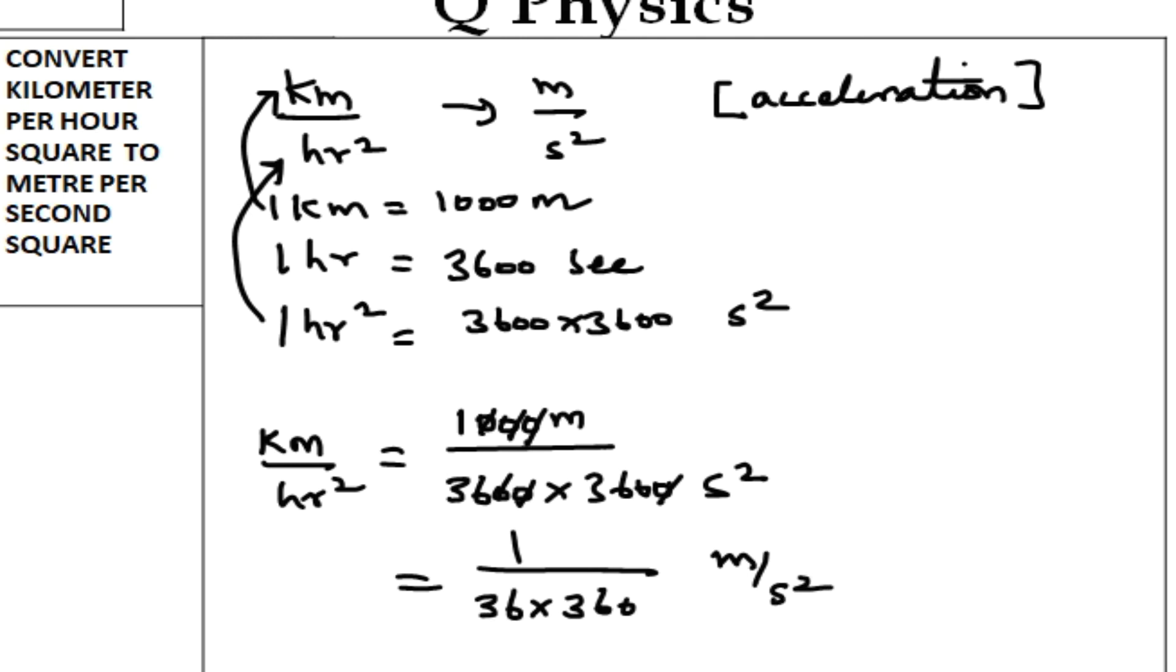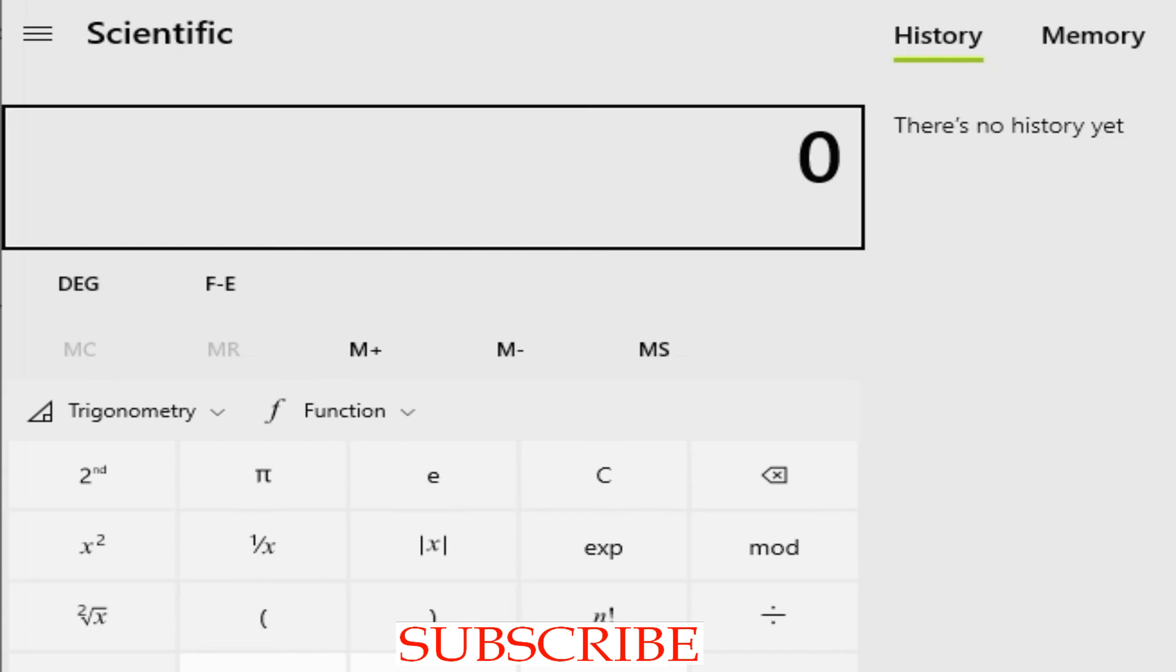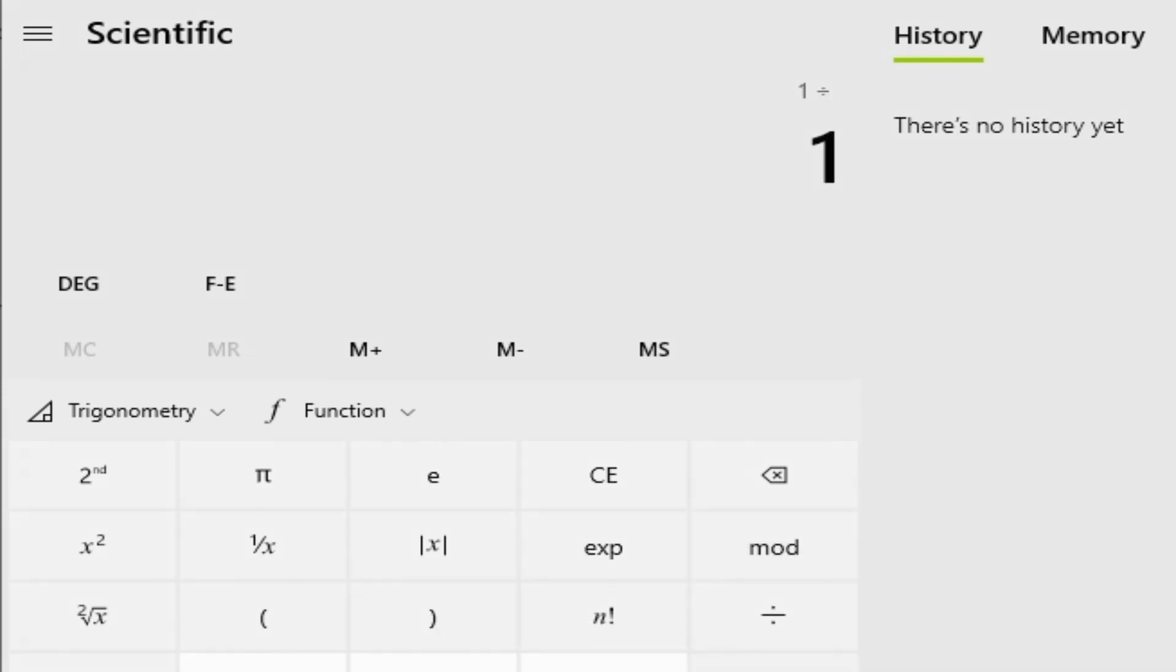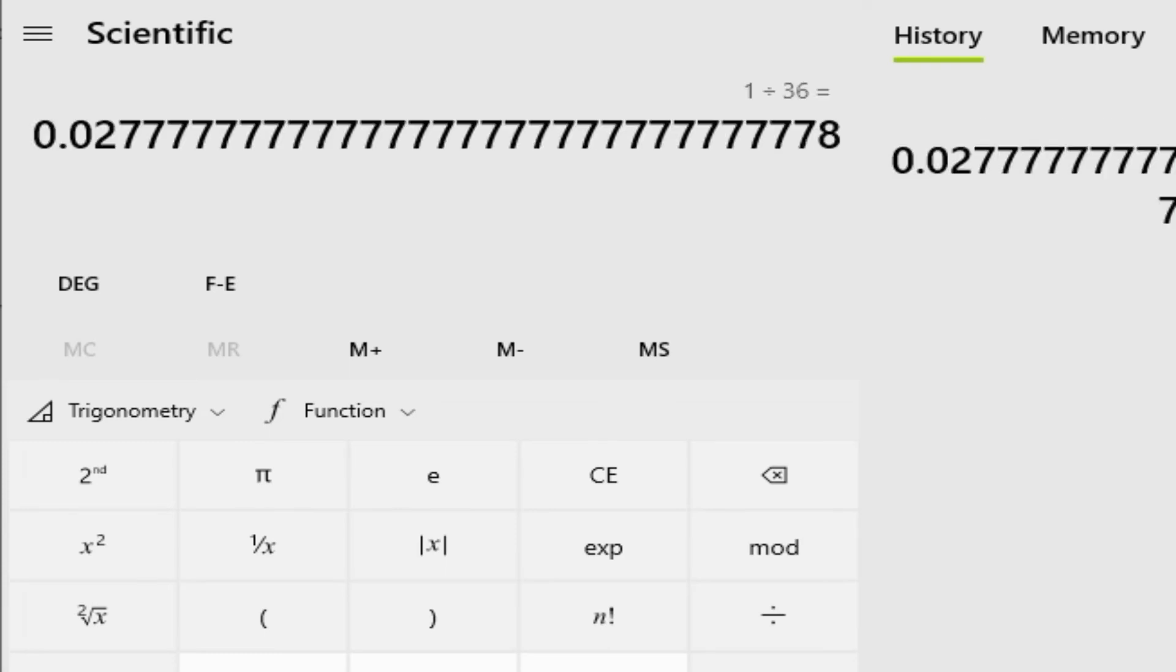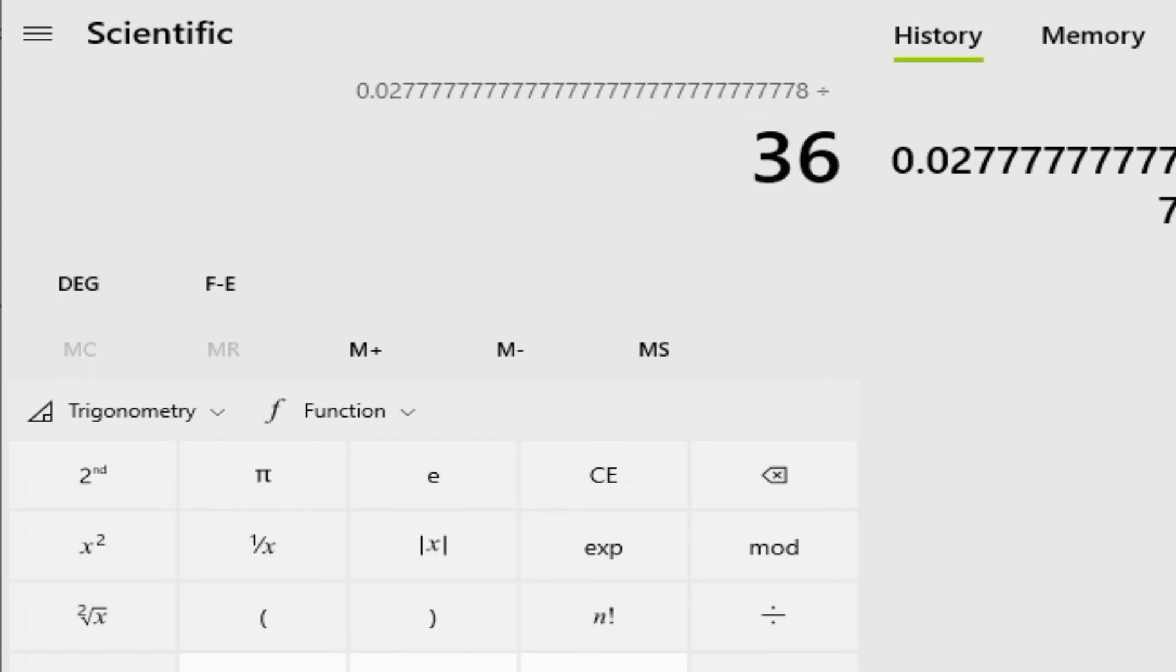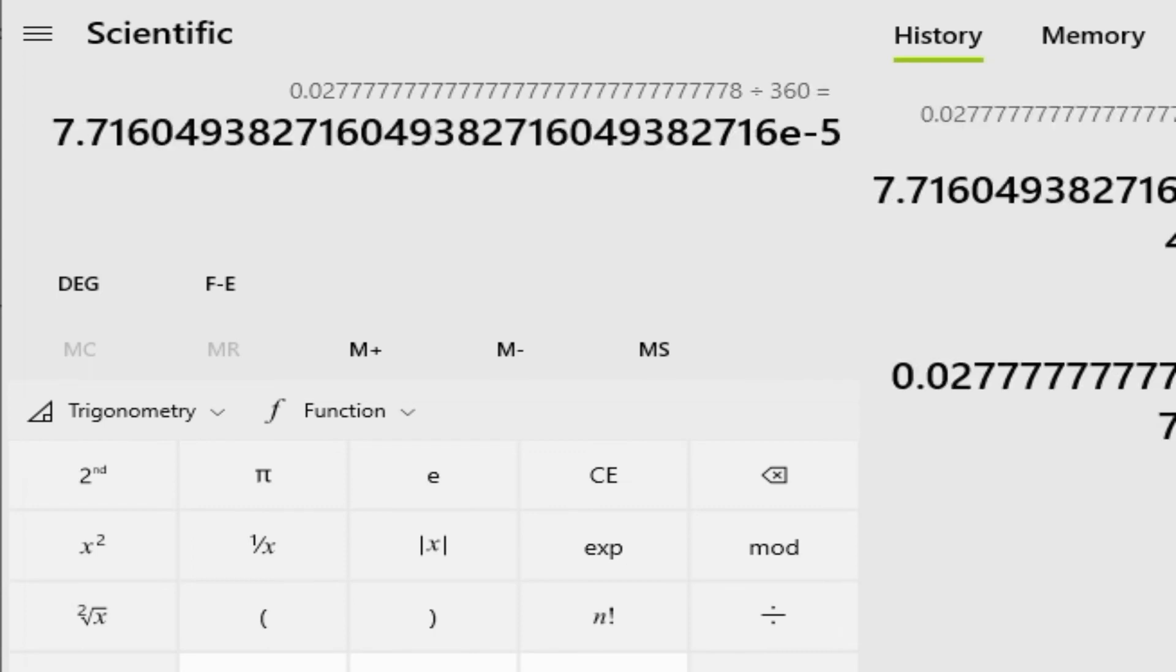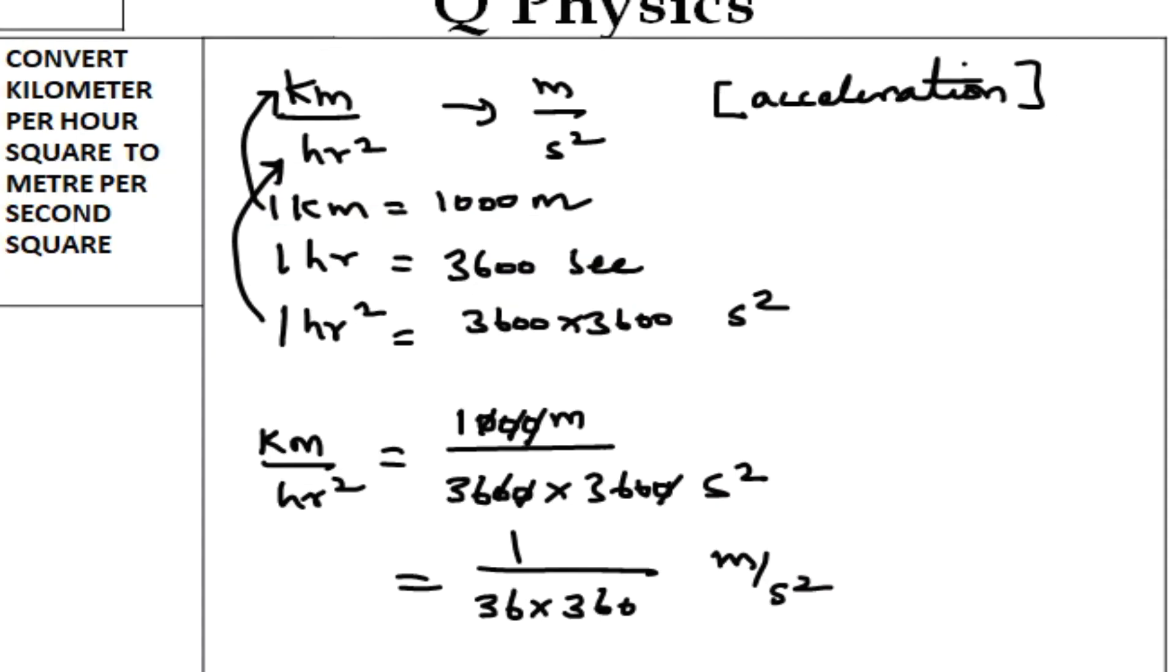One divide by 36, and this value divided by 360, equals 7.716 into 10 power minus 5. So the conversion factor is 7.716 × 10^-5 meter per second square.